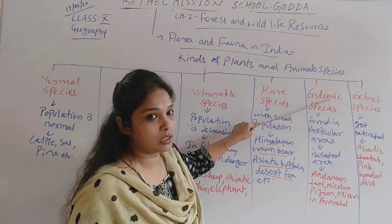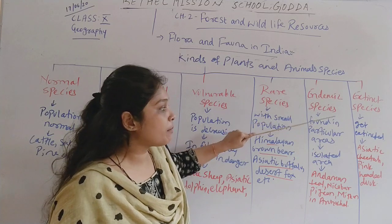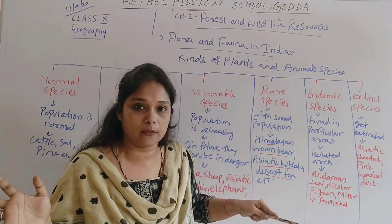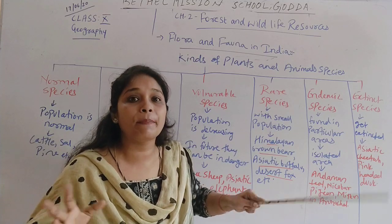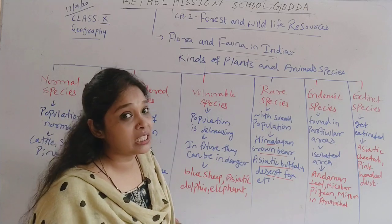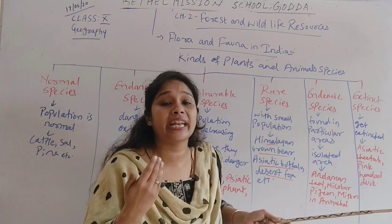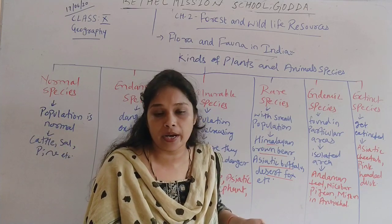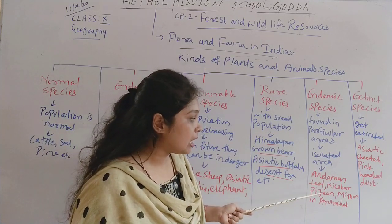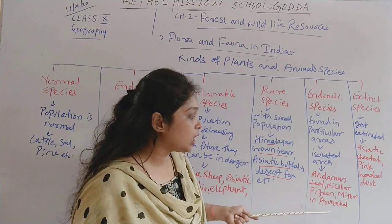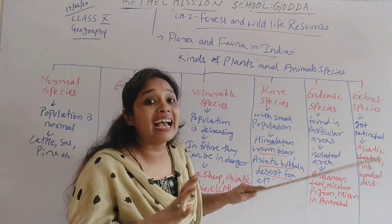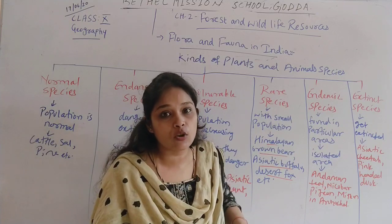Next is endemic species — these can be found only in particular or isolated areas and cannot be found everywhere. Examples include the Andaman Teal, Nicobar Pigeon, and Mithun in Arunachal Pradesh — wild animals found only in isolated areas where human beings generally cannot go.